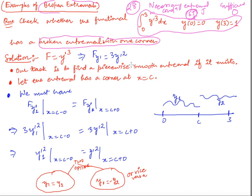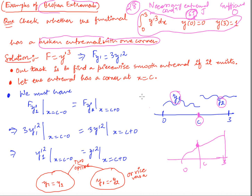If a broken extremal exists, we need to find it. Suppose the broken extremal exists and the break point is c, so from 0 to 3 there is a point c such that on the left-hand side the solution is y1 and on the right-hand side the solution is y2. The solution is continuous at c — it may not be differentiable, but it must be continuous.